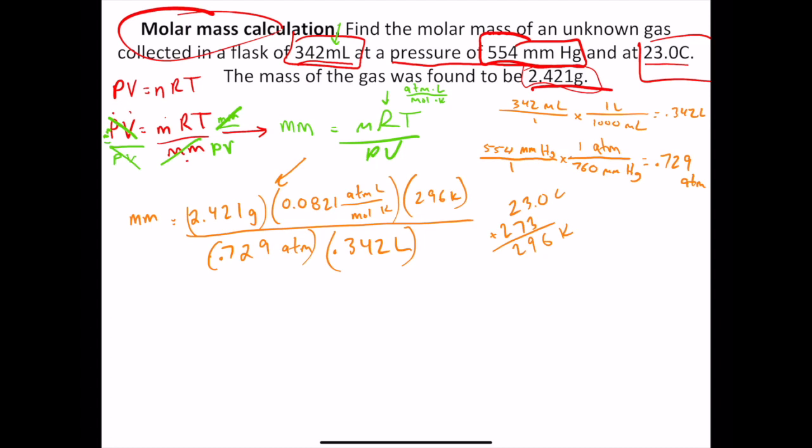Okay. And you want to make sure you plug this in your calculator correctly as well. So it's 2.421 times 0.0821 times 296. Hit the equal button. It's going to give you about 58.8 and then some numbers. So then you hit the divide button. 0.729. Hit enter. It's going to give you 80.7 something. And then you're going to hit divide again. 0.342. Enter. And that's going to give you 235.98.